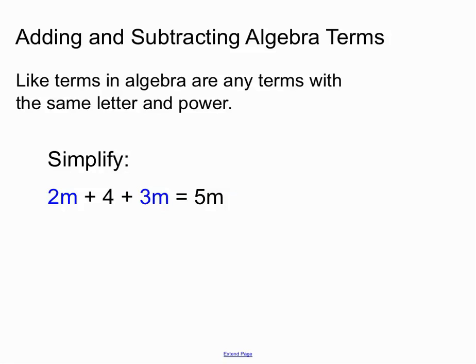And so we can make 2m plus 3m, there's 5m, and the 4 isn't a like term so it just gets listed after the first part of our answer. So final answer there, 5m plus 4.